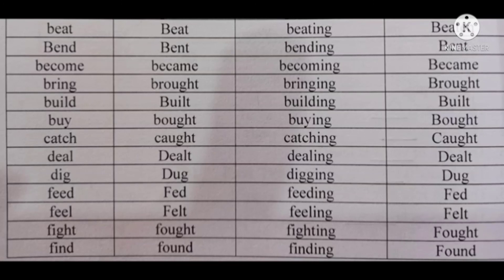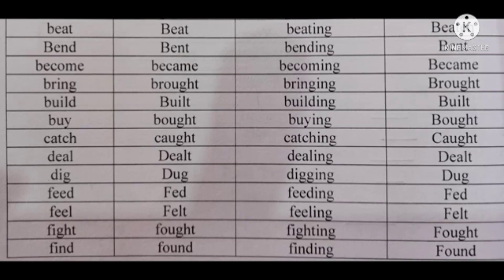More type two verbs: Bring — root form: bring, past tense: brought, past participle: brought. Build — root form: build, past tense: built, past participle: built. Buy — root form: buy, past tense: bought, past participle: bought. Catch — root form: catch, past tense: caught, past participle: caught. Deal — root form: deal, past tense: dealt, past participle: dealt. Dig — root form: dig, past tense: dug, past participle: dug. Feed — root form: feed, past tense: fed, past participle: fed. Feel — root form: feel, past tense: felt, past participle: felt. Fight — root form: fight, past tense: fought, past participle: fought. Find — root form: find, past tense: found, past participle: found.